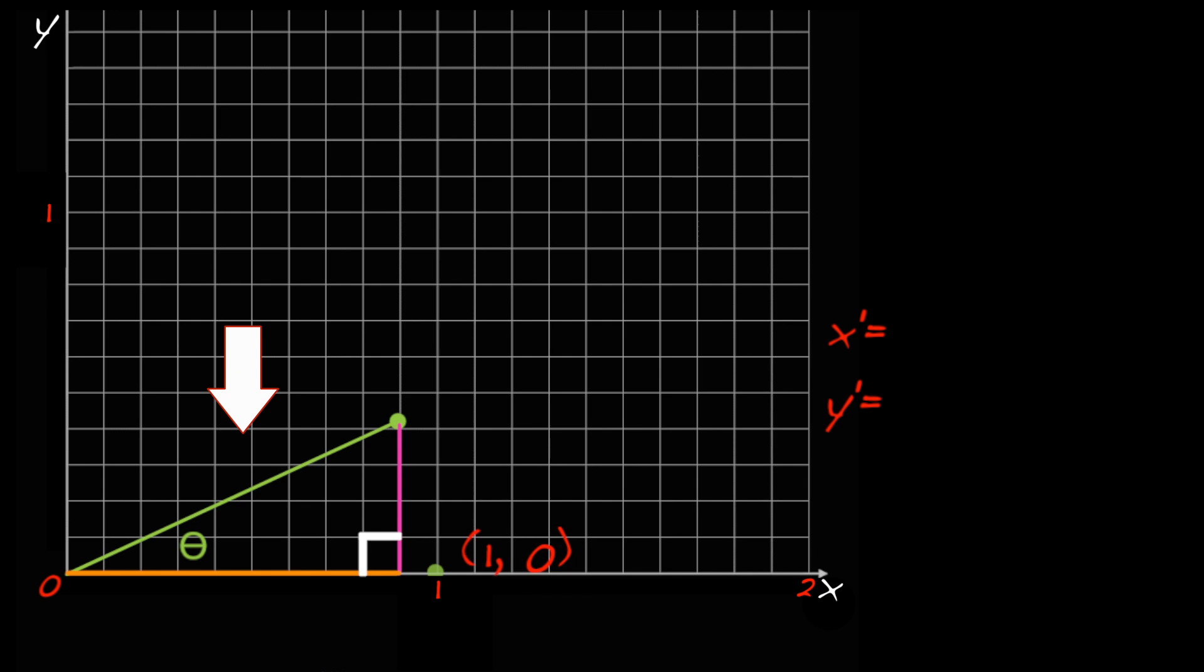Notice that the length of the green line, the hypotenuse of the triangle, is 1 because the point (1, 0) is 1 unit away from the origin, and lengths don't change when you rotate.